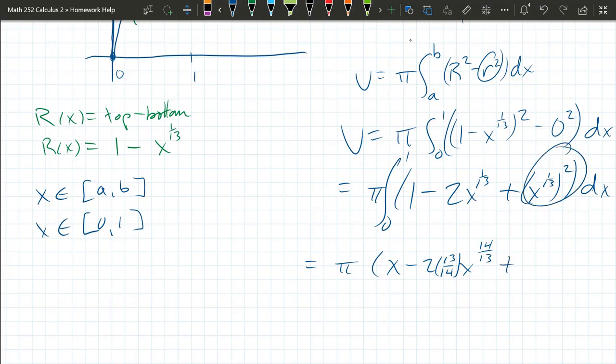So this is x to the 2/13ths. You add one to that 2/13ths, so you get 13/13ths plus 2/13ths and you get 15/13ths, times the reciprocal 13/15ths. Going from 0 to 1.